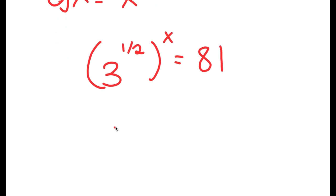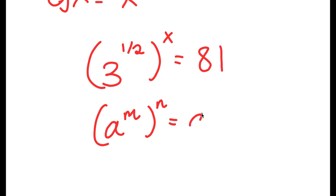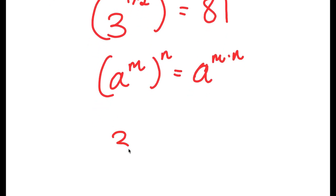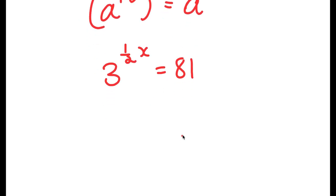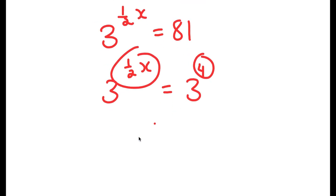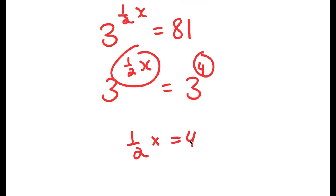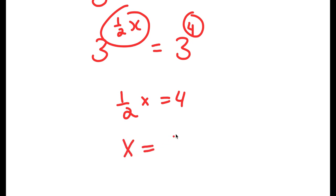Now, if I have something in the form a to the power of m to the power of n, this equals a to the power of m times n. So 3 to the power of one half to the power of x equals 3 to the power of one half times x, which is simply one half x. And this equals 81, which is the same as 3 to the power of 4. So one half x equals 4, and x equals 8.